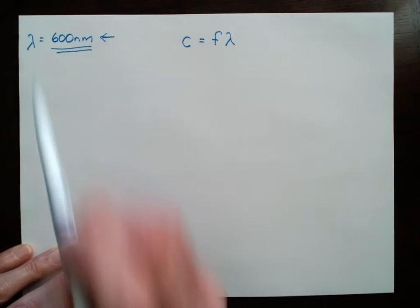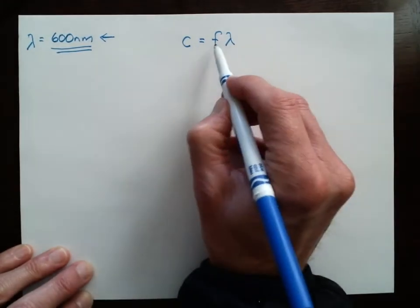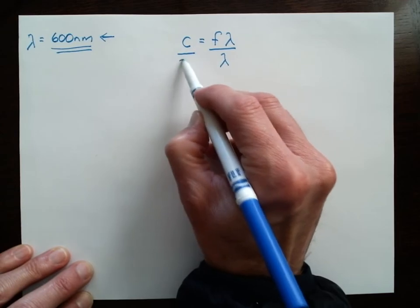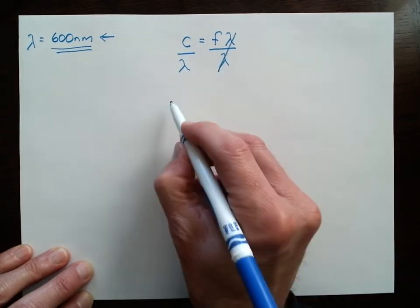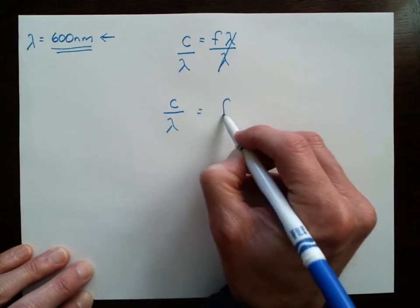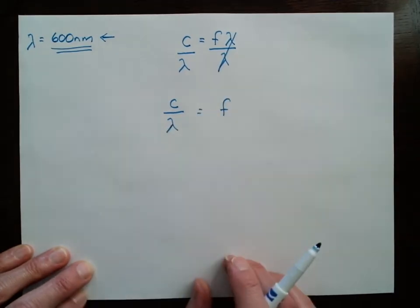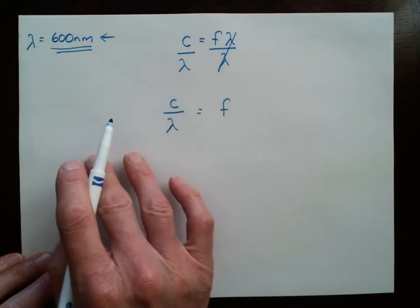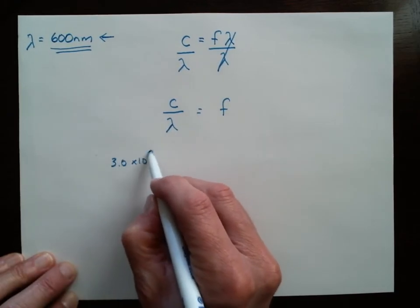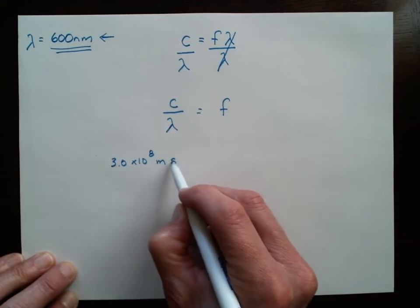This is my wavelength. So to find the frequency, I'm going to need to divide both sides of this equation by the wavelength, and I get the speed of light over the wavelength is equal to the frequency. Simple enough. So we know the speed of light in a vacuum, that's 3.0 times 10 to the 8 meters per second.